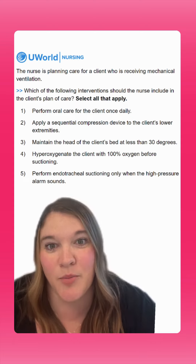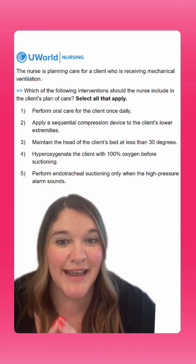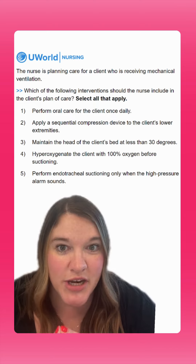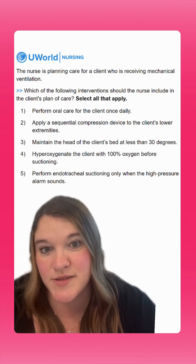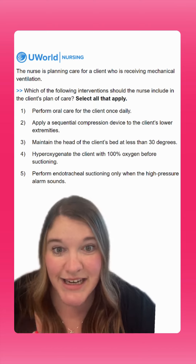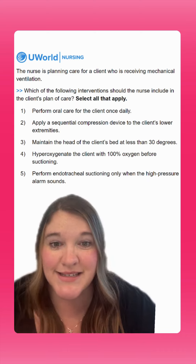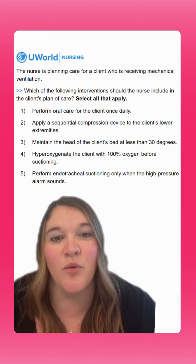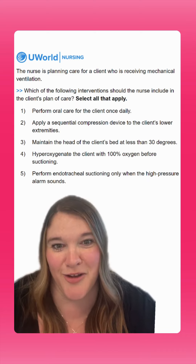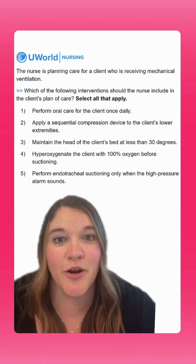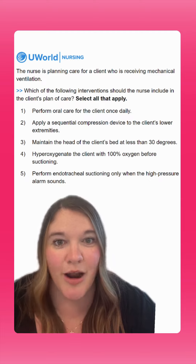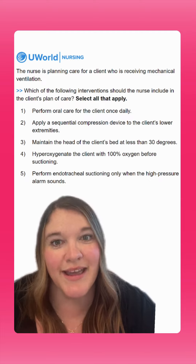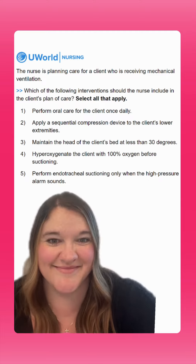Option five says to perform endotracheal suctioning only when the high pressure alarm sounds. This is going to be an incorrect option. We want to perform suctioning as needed, constantly assessing for it, and also perform it when the high pressure alarm sounds — not exclusively when the alarm sounds. So our correct options are options two and four.